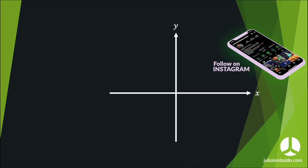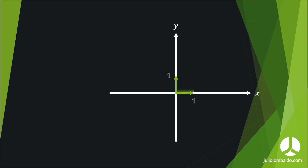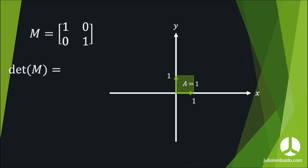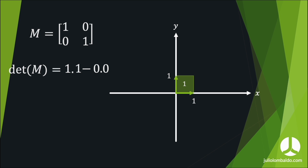If you take two axes x and y and two vectors, you can imagine a square formed by those two vectors, where each side is one. Taking the identity matrix — a 2×2 matrix — the determinant is one times one minus zero times zero, which equals one.